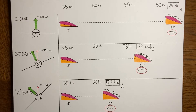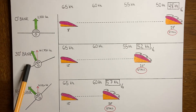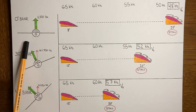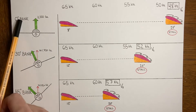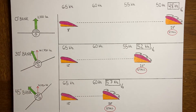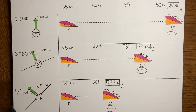So how does bank angle affect the stalling speed of an airplane? Let's take a look. We've got three different airplanes here: one wings level at zero degrees of bank, one in a 30 degree bank, and one in a 45 degree bank.